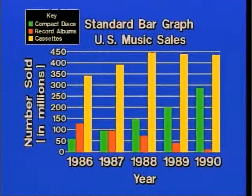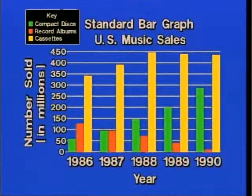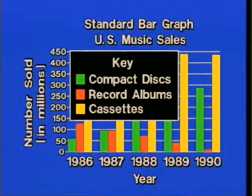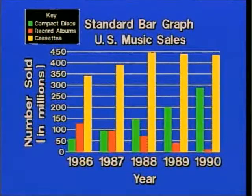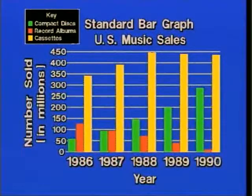Before we leave bar graphs, let's look at a more sophisticated one for interpretation purposes. This is a bar graph of United States music sales from 1986 through 1990. A bar graph involving multiple colors requires a key: green stands for compact discs, red is record albums, and yellow is cassettes. The yellow items — cassettes — are peaking at the top, the green CDs are increasing dramatically, and record albums are decreasing during this time period.